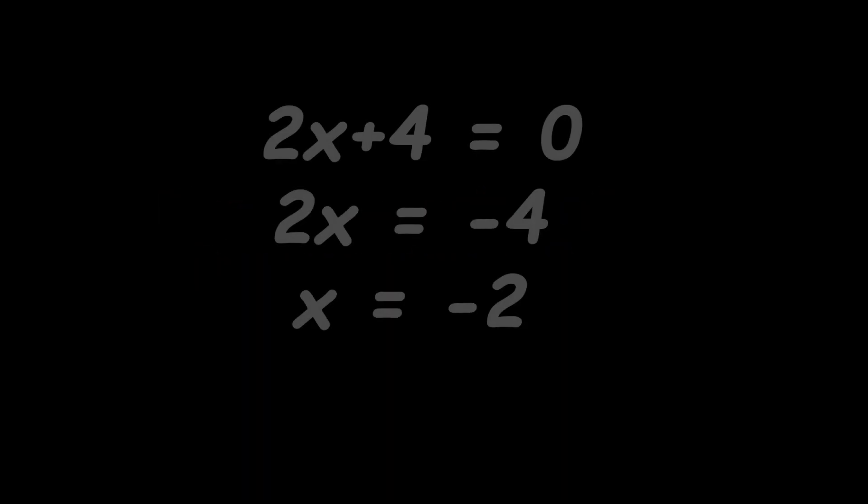Next up we have the vertical asymptote. For this, we need to plug in the value of denominator equal to 0. And 2x + 4 = 0 gives us the value of x as -2.